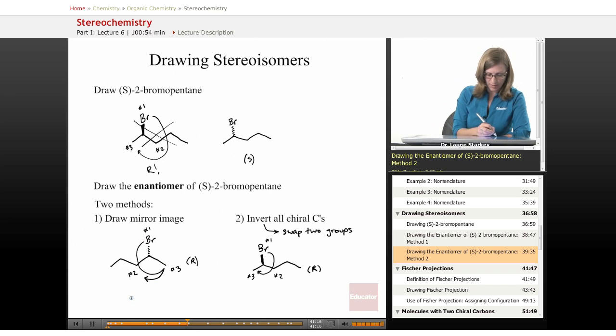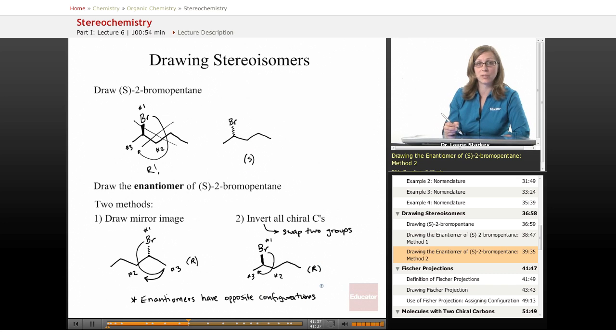And something that we can observe here is that enantiomers have opposite configurations. They have opposite configurations, so if one enantiomer is the S configuration, the other enantiomer must be the R configuration. That will always be true. And even if you have multiple chiral centers, all of the configurations in the chiral centers of one enantiomer will be the opposite in the other.